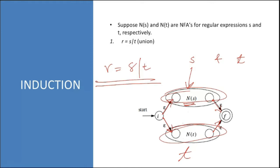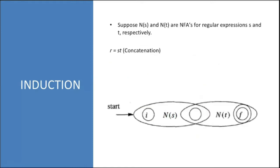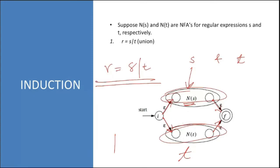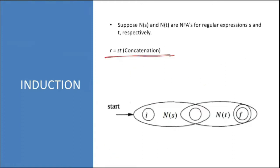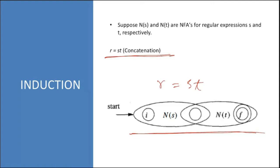For concatenation, if R equals S concatenated with T, you simply attach the NFA for T at the end of the NFA for S, getting a bigger NFA that represents the concatenated language R = S·T. These are the rules we use to convert a regular expression to an NFA.